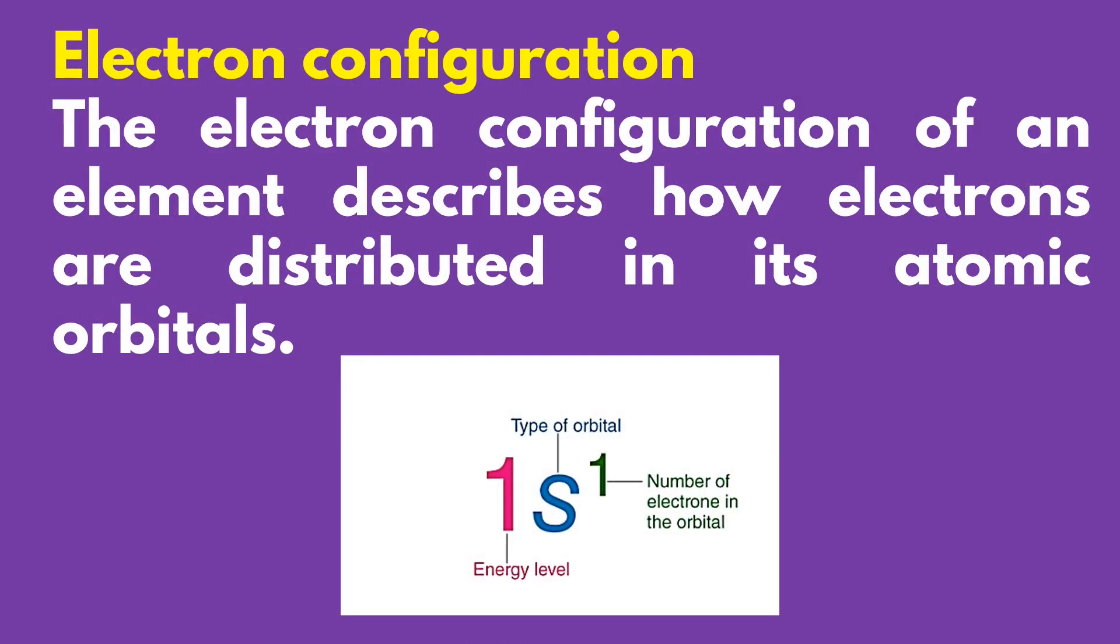The electron configuration of an element describes how electrons are distributed in its atomic orbitals. Electron configurations of atoms follow a standard notation in which all electron-containing atomic subshells with the number of electrons they hold written in superscript are placed in a sequence.